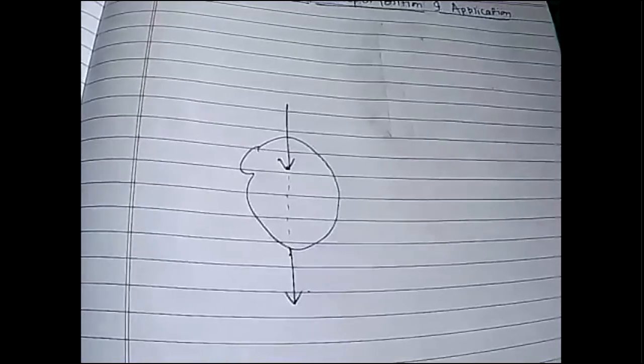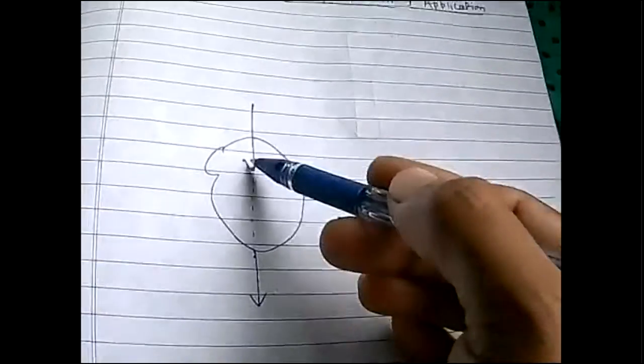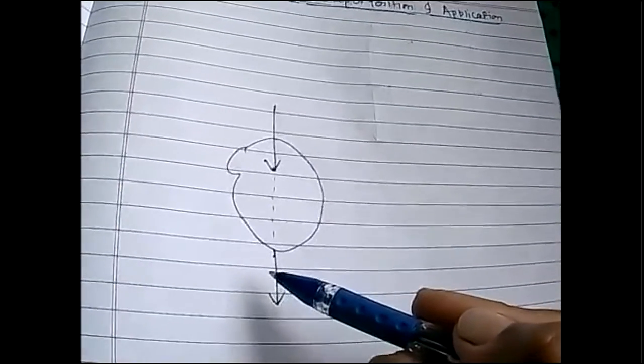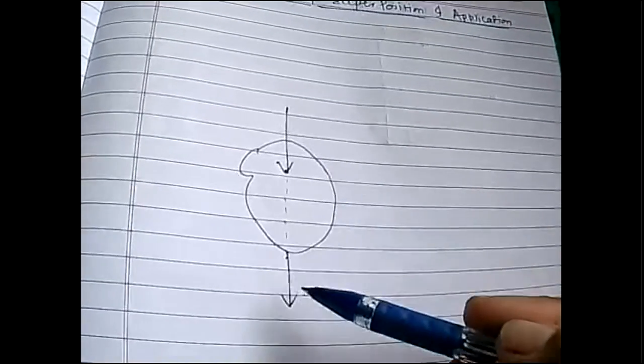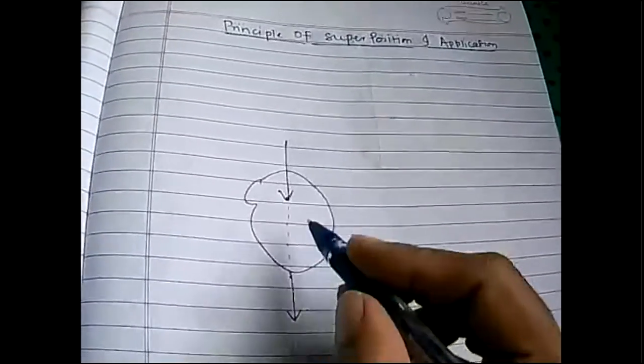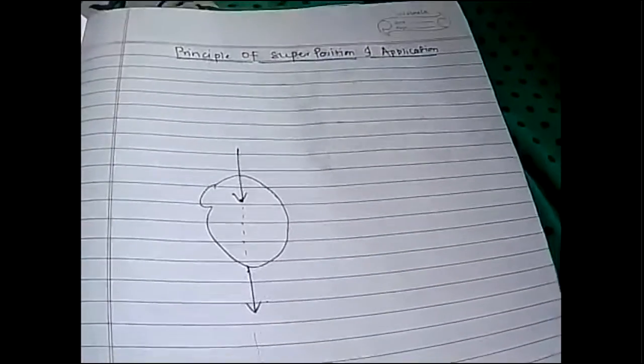What does it state? The point of application of a force can be transmitted anywhere along its line of action, but within the body. I cannot mark over here, but within the body I can mark. This is principle of transmissibility.